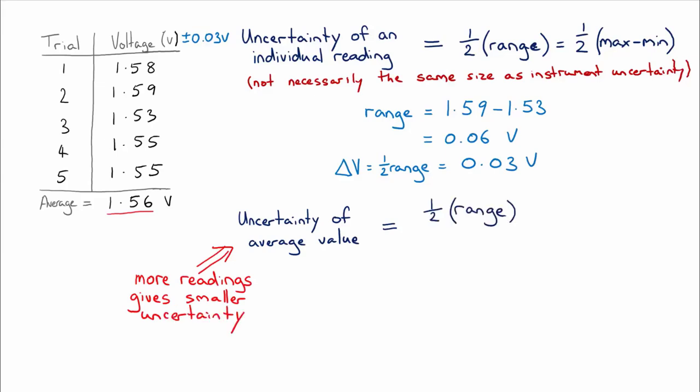So the uncertainty of the average value starts off again with the half range because obviously it depends on how scattered that data is, but we're going to divide it by the square root of the number of measurements that we took or the number of readings we took.